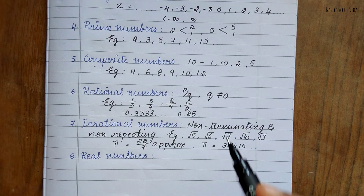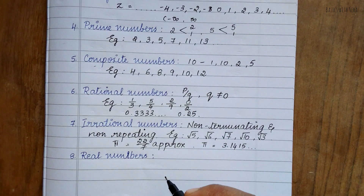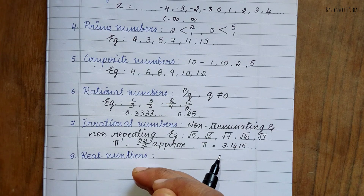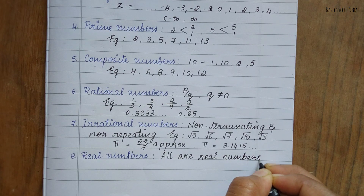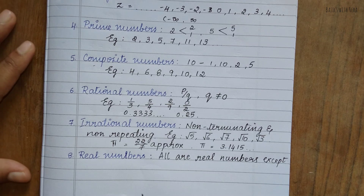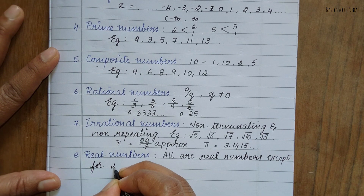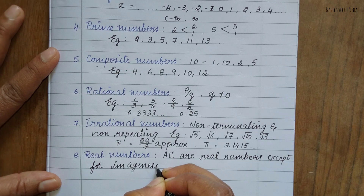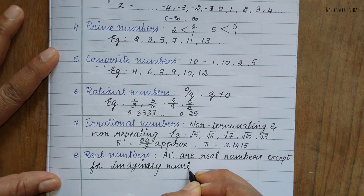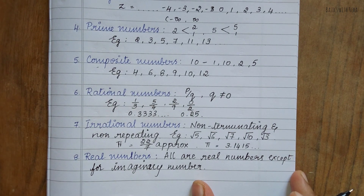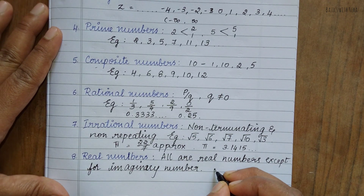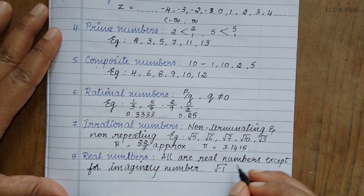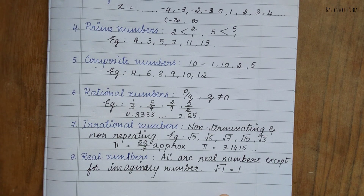Real numbers include all numbers except imaginary numbers. Imaginary numbers are the square root of a negative number — for example, the square root of minus 1 is an imaginary number, mathematically represented as i.